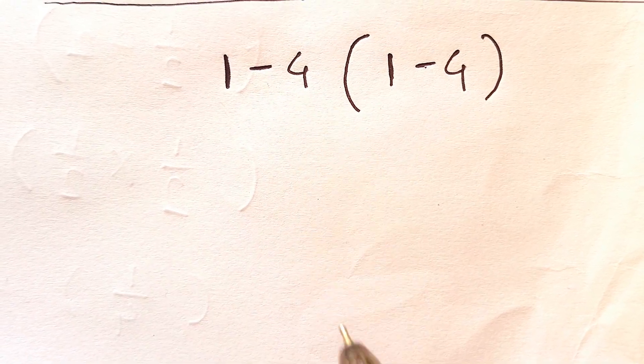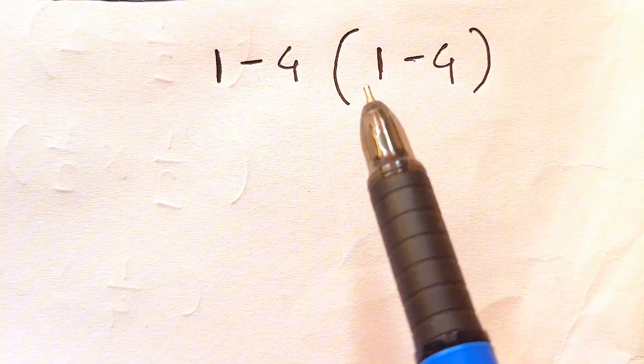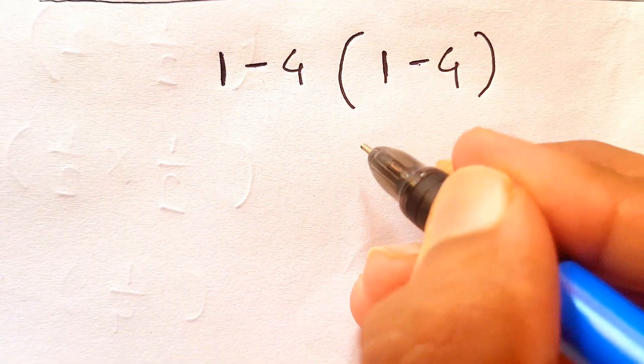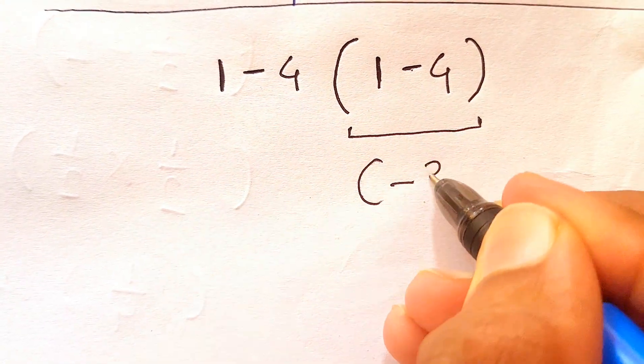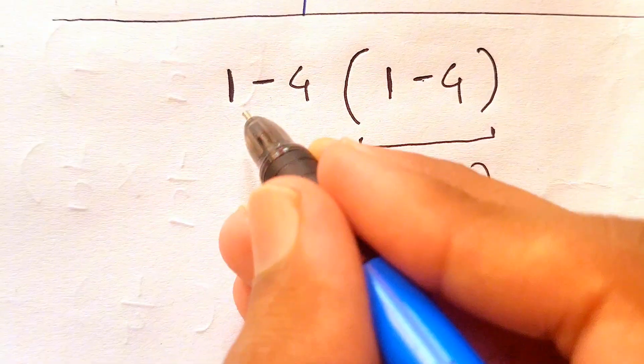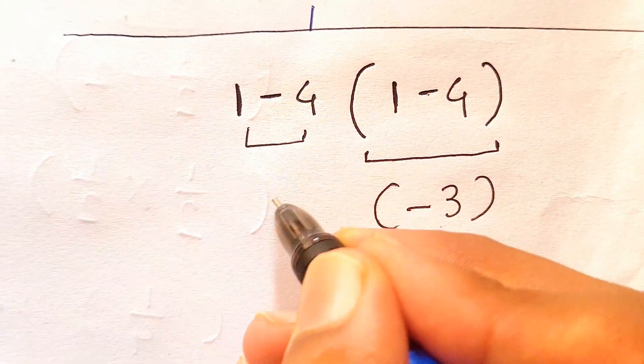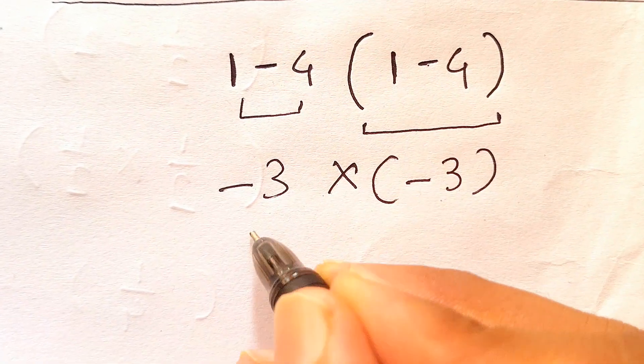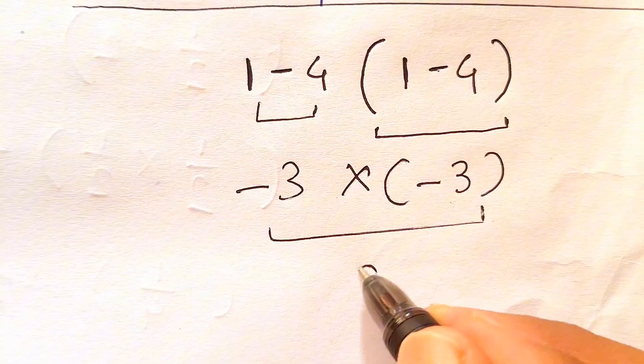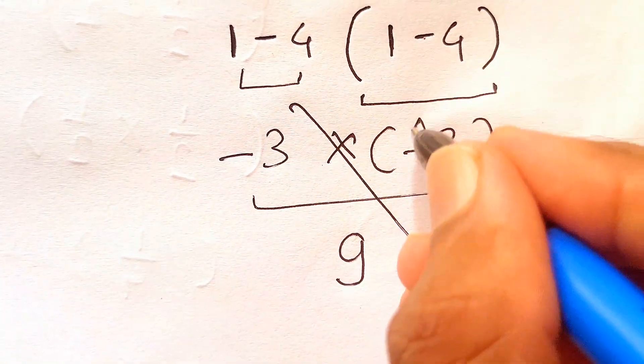Welcome back guys, so we have the expression 1 minus 4 times 1 minus 4. Let's try solving this. 1 minus 4 gives us negative 3, and again this 1 minus 4 also gives us negative 3. Now negative 3 times negative 3 is simply 9.